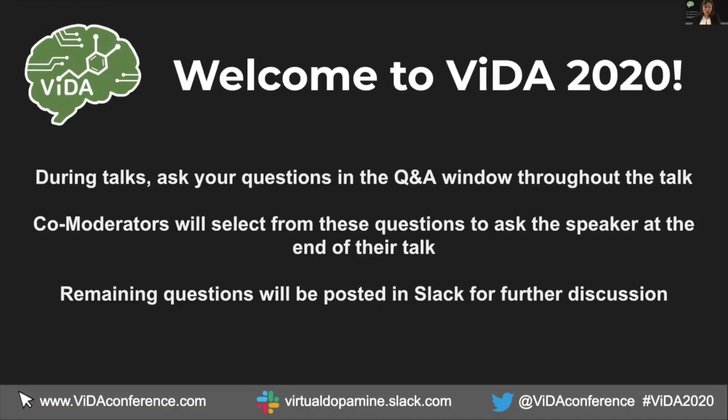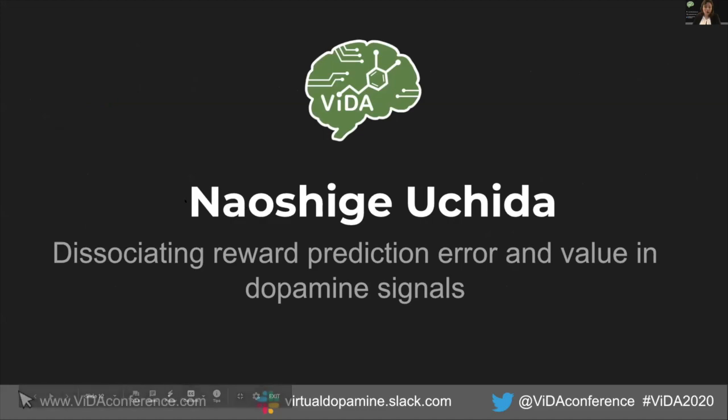I think it's going to be a template for future meetings beyond dopamine, so it's really exciting. Thanks everyone for all the effort, especially in the context of the recent pandemic shutdown. We're all really excited about this opportunity. So I'm here to introduce the first speaker, Dr. Naoshige Uchida, professor of cellular and molecular biology at Harvard University. He will be talking about dissociating reward prediction error and value in dopamine signals. You'll have 20 minutes for your talk and then a 10 minute question period. Everyone can put questions into the Q&A button.